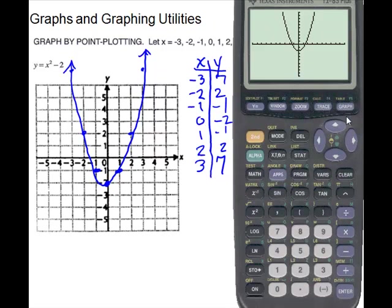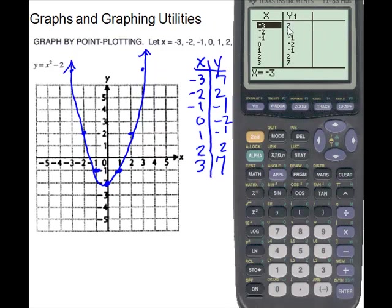Now let's look at the table. There are different ways to look at your solution — you have the picture, but sometimes it's important to look at the tables to see the values. Press second and then graph; the word 'table' is above that button. And here is our table — it should give back those same values we worked out, and it does. Those are the first things about your graphing calculator.